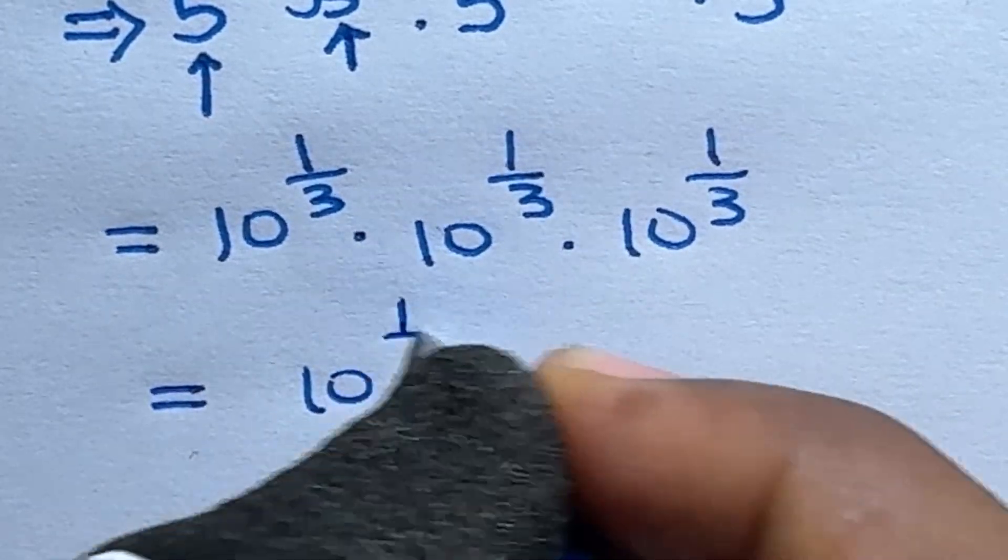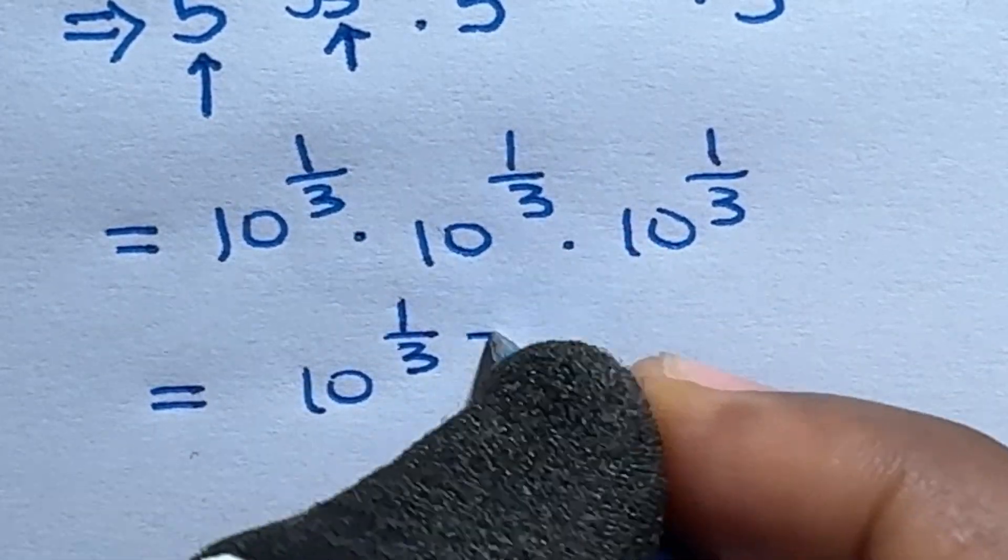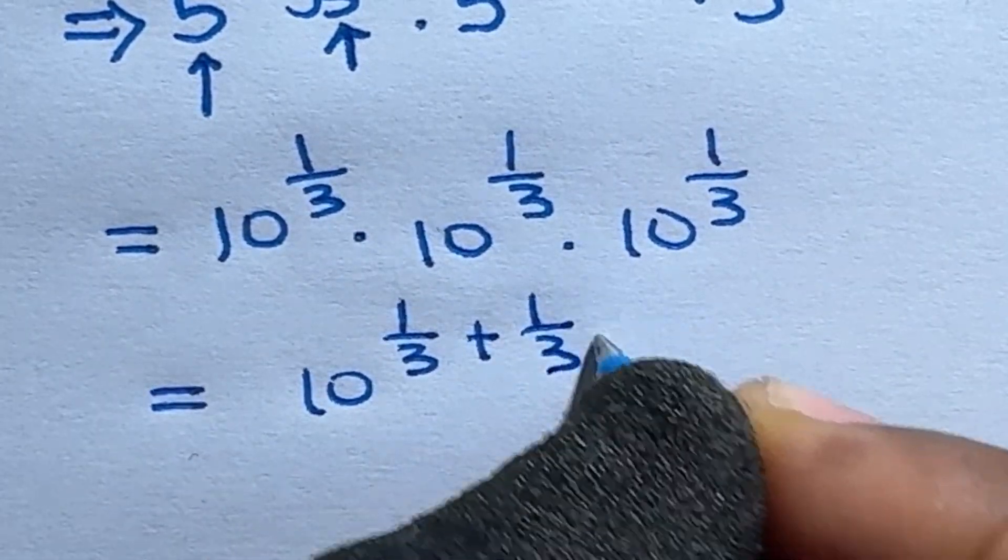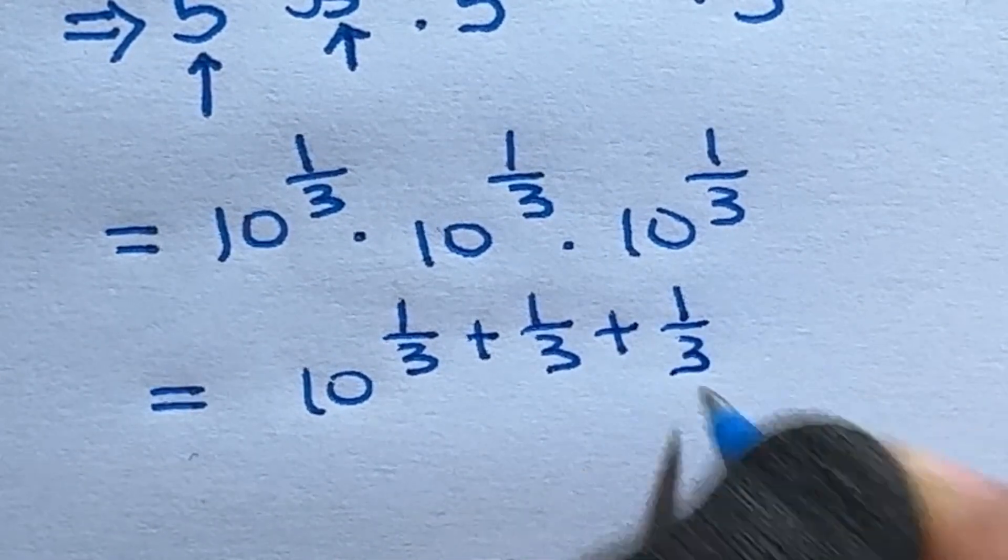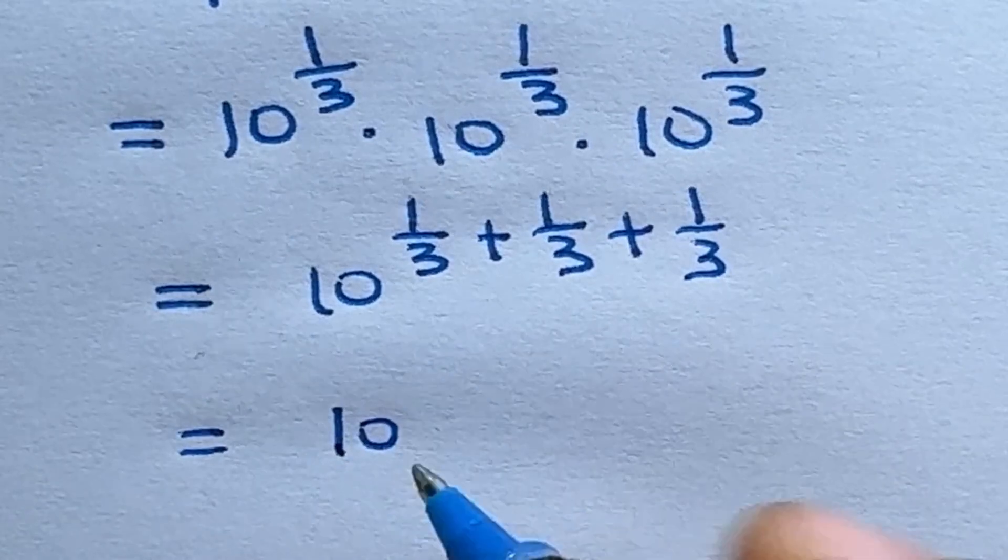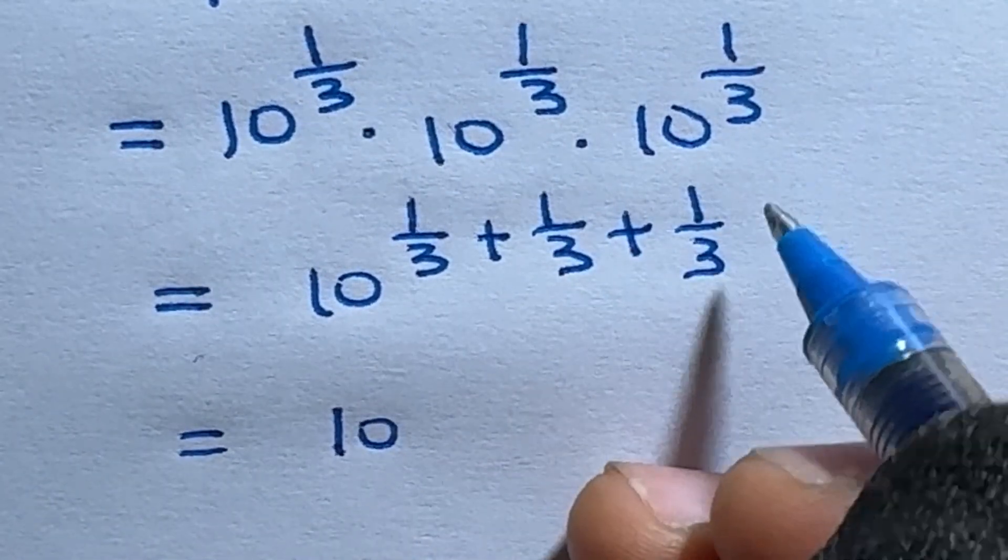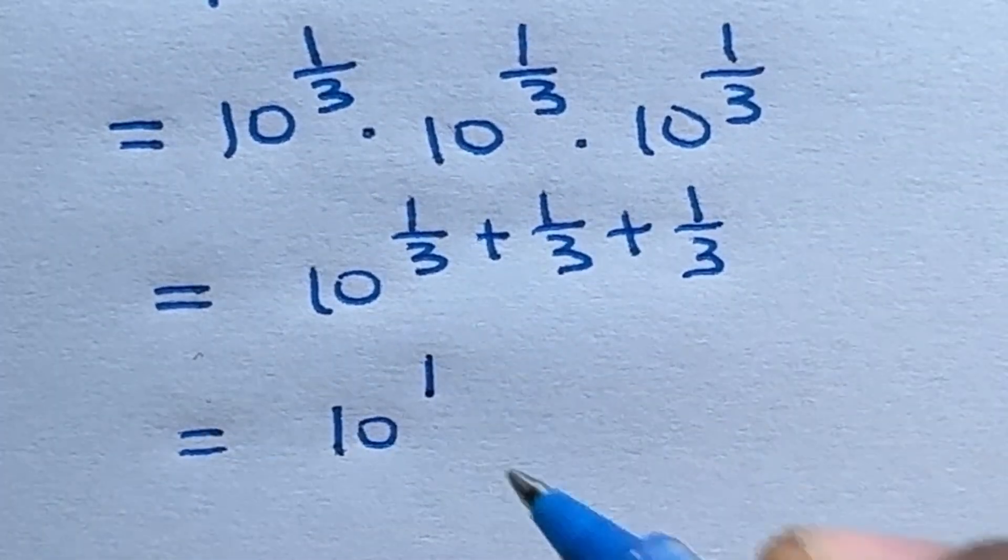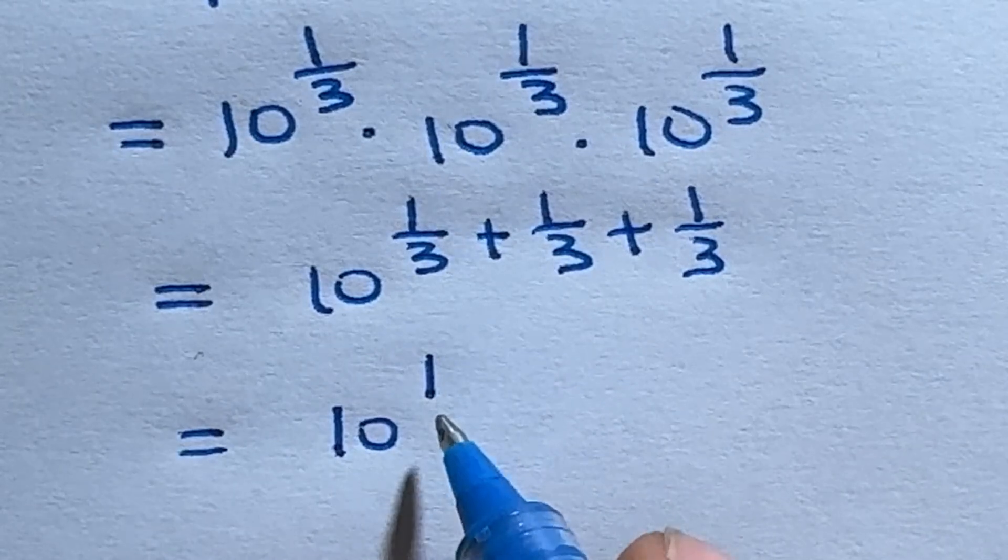This equals 10 raised to power 1 over 3 plus 1 over 3 plus 1 over 3, which is equal to 10 raised to power 1. And because 10 raised to power 1 is 10, our final answer is 10.